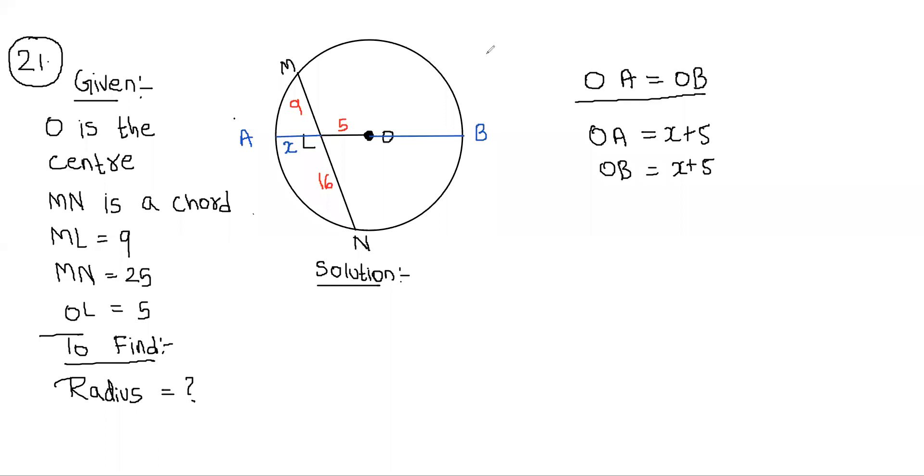So here we can say that MN and AB intersect at what point? At point L. So if chord MN and AB intersect at point L, by theorem of internal division, what will happen? How do we write the formula? We start with point of intersection. That means L. We will say that LM into LN is equal to LA into LB.